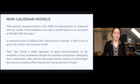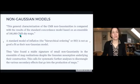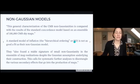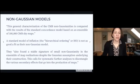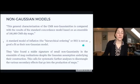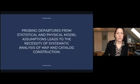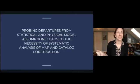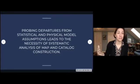Boucher et al. found an interesting result: they compared it with results of the standard concordance model based on approximately 100,000 sky maps, and found that a standard model of inflation — the hierarchical ordering (HO) model — is not as good a fit to this data as their non-Gaussian model. They also found a stable signature of small non-Gaussianity in the ensemble of map realizations despite the Gaussian assumption underlying the very construction of those maps. They argue this calls for systematic further analyses to disentangle the various secondary effects that go into the production of the maps.